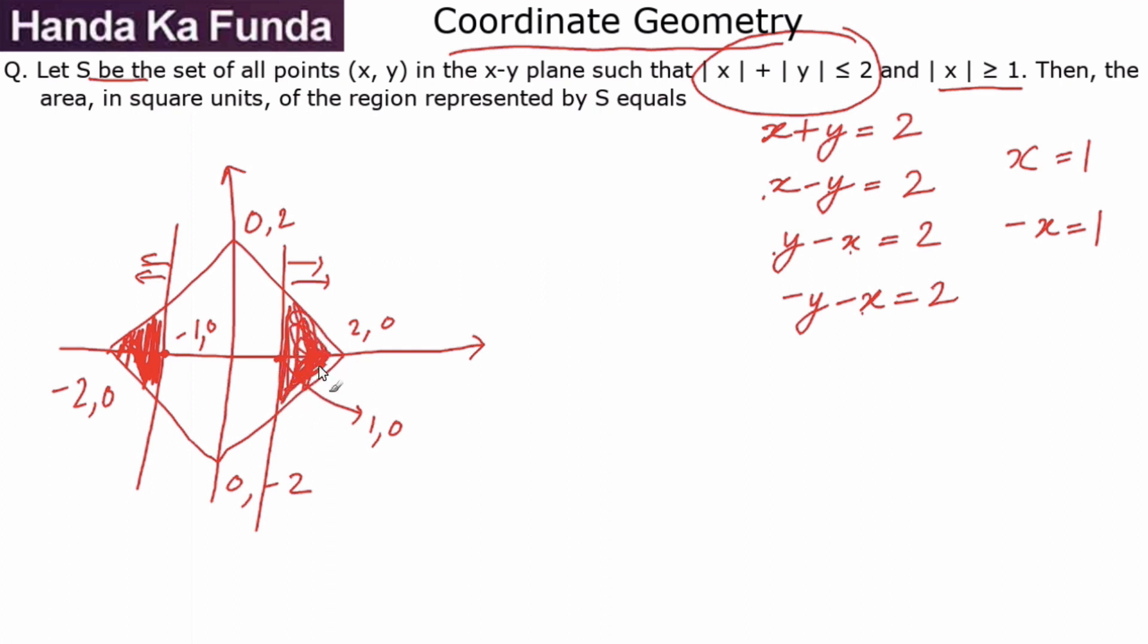That is the region that we are supposed to find out. Finding that out should not be very difficult. Let's just consider one very small part of it—this particular triangle in the top half. This particular point is (2, 0), this particular point is (1, 0), that's where it intersected.